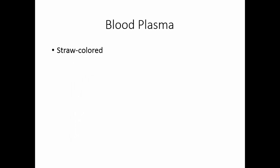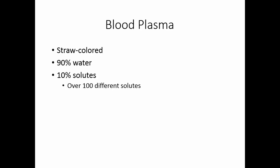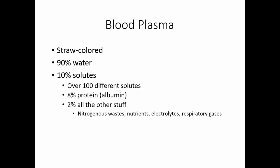Blood plasma is the straw-colored portion of the blood. It's 90% water and 10% dissolved material, with over 100 different chemicals dissolved in the blood at any given time. Of all the dissolved materials, about 8% is protein — albumin — which helps keep water drawn into the blood. The other 2% includes nitrogenous waste products, nutrients, electrolytes, and respiratory gases.